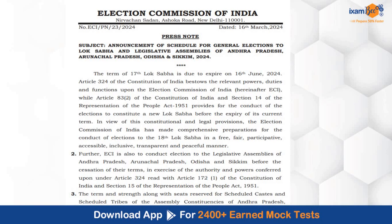Before going to the dates, let us see the provisions of law covered in this press note. The 17th Lok Sabha is set to expire on 16th June 2024. As per the law, we are supposed to constitute the new Lok Sabha before the expiry of the term, and our election results will come by 4th of June. Article 324 of the Constitution gives all these powers to the Election Commission of India. Article 83.2 of the Constitution and Section 14 of the Representation of People's Act provide for the conduct of elections to constitute a new Lok Sabha before the expiry of its current term.